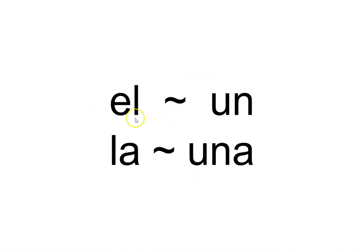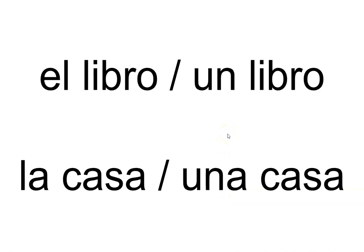There is a relationship: if the noun is masculine and takes 'el' as its definite article, it will take 'un' as its indefinite article. So 'el carro' (the car) becomes 'un carro' (a car). If the noun is feminine and takes 'la,' the corresponding indefinite article is 'una.' For example, 'la puerta' (the door) becomes 'una puerta' (a door). Another example: 'el libro' — 'un libro' (a book); 'la casa' — 'una casa' (a house).